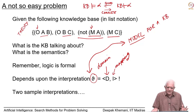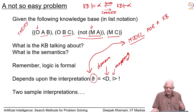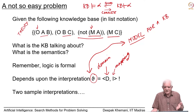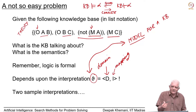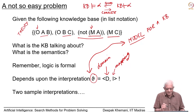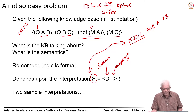For our very small knowledge base — remember, there are two predicates: O, which is a binary predicate, and M, which is a unary predicate — let us look at two sample interpretations. Before we do that, maybe you should take a pause and try to construct an interpretation for these four sentences: give a meaning to O and M, and to the constants A, B, C, such that all the statements become true.